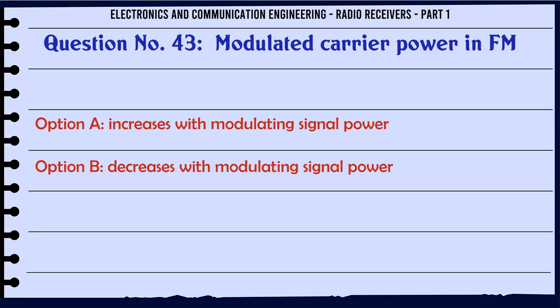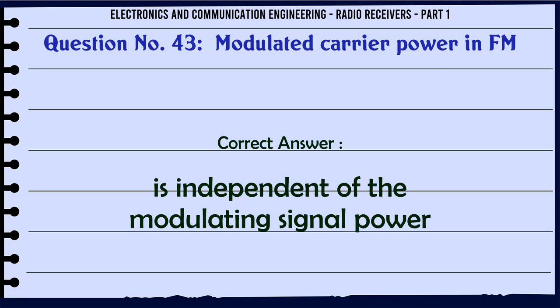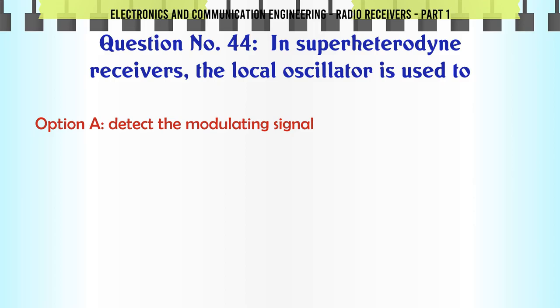Modulated carrier power in FM: A. Increases with modulating signal power. B. Decreases with modulating signal power. C. Is independent of the modulating signal power. D. None. The correct answer is is independent of the modulating signal power.